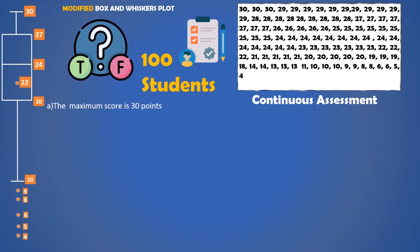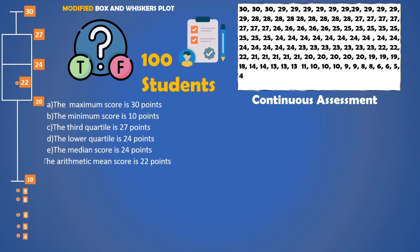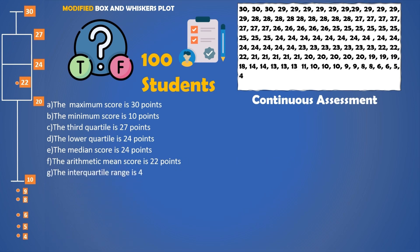The maximum score is 30 points. The minimum score is 10 points. The third quartile is 27 points. The lower quartile is 24 points. The median score is 24 points. The arithmetic mean score is 22 points. The interquartile range is 4 points. The data has no outliers. The range of the data is 20 points.